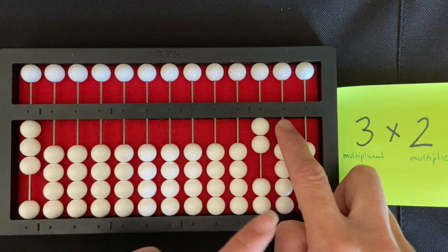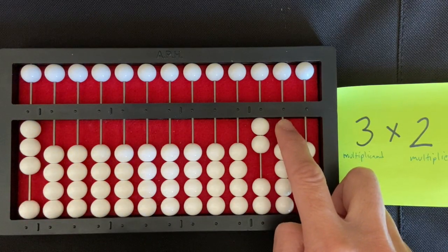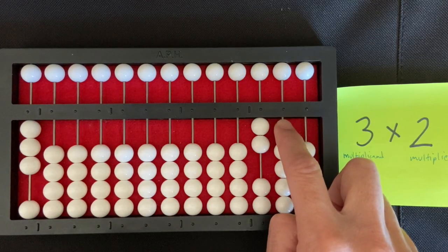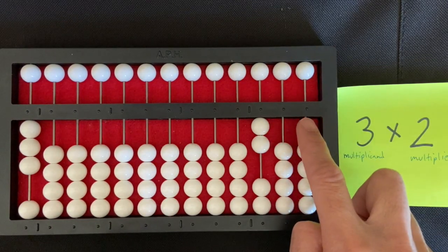But when I think of it here on my abacus, I want to think of it as zero, six. So I'm going to say zero and set zero in my tens rod, and then six.